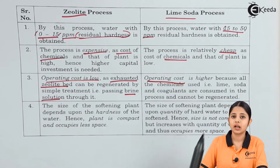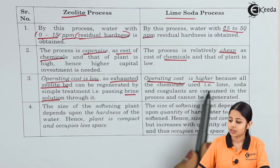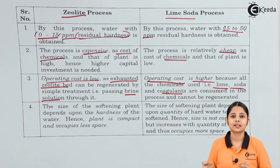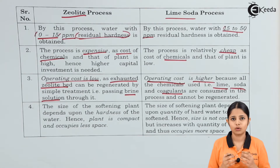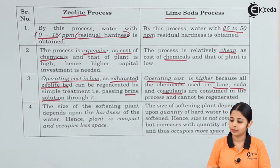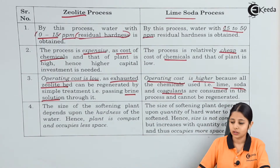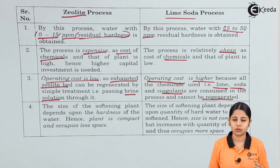In contrast, the operating cost for the lime soda process is higher because all the chemicals used — lime (CaO), soda, and coagulants — are consumed in the process and cannot be regenerated. Coagulants are promoters added to start and accelerate the reaction since the lime soda process does not happen spontaneously. Because lime and soda must be continuously repurchased, the maintenance and operating cost is much higher than for the zeolite process.